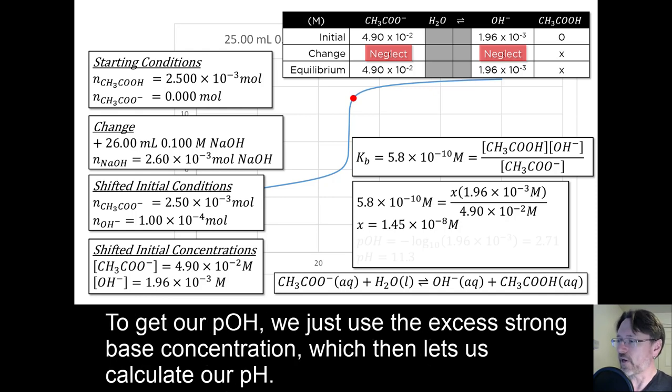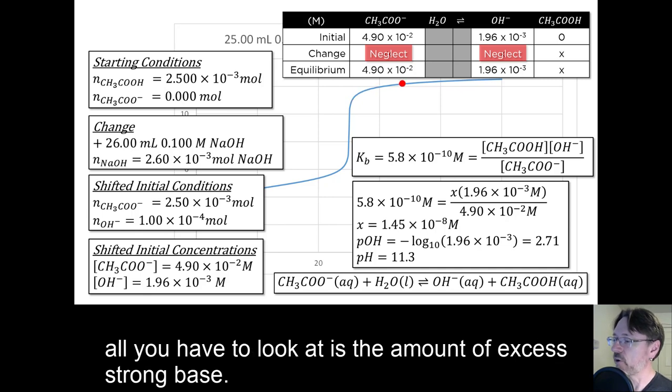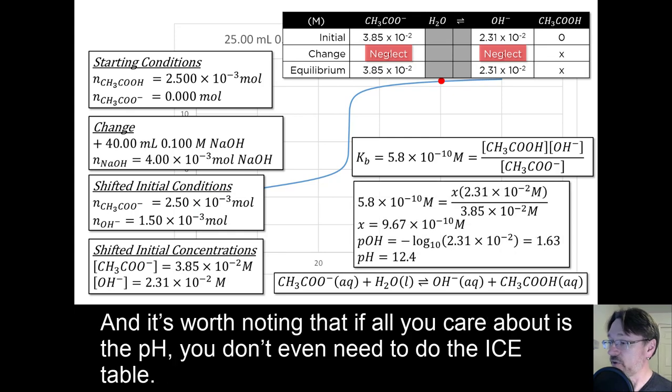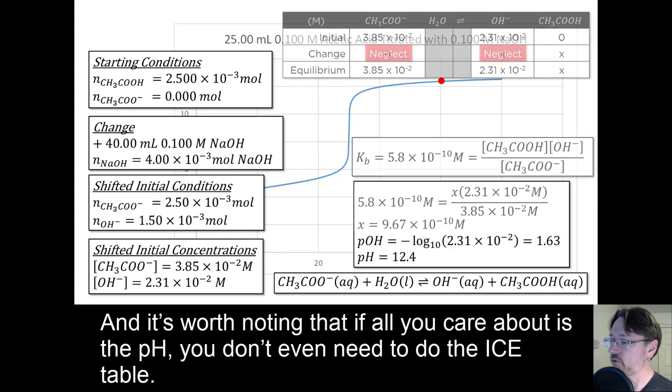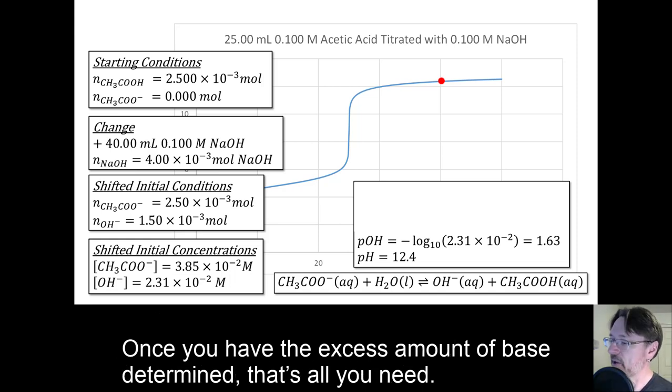To get our pOH, we just use the excess strong base concentration, which lets us calculate our pH. Going deeper past the equivalence point doesn't change any of this approach. All you have to do is look at the amount of excess strong base. And it's worth noting that if all you care about is the pH, you don't even need to do the ice table. Once you have the excess amount of base determined, that's all you need.